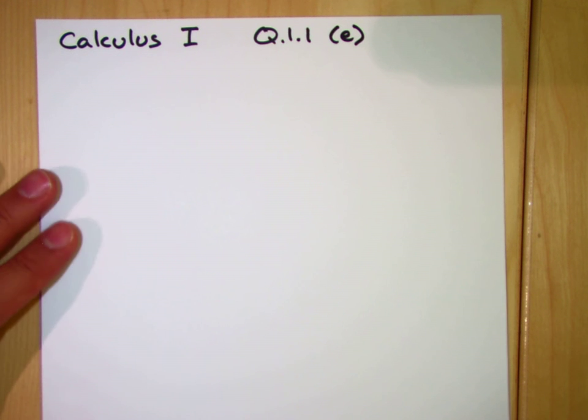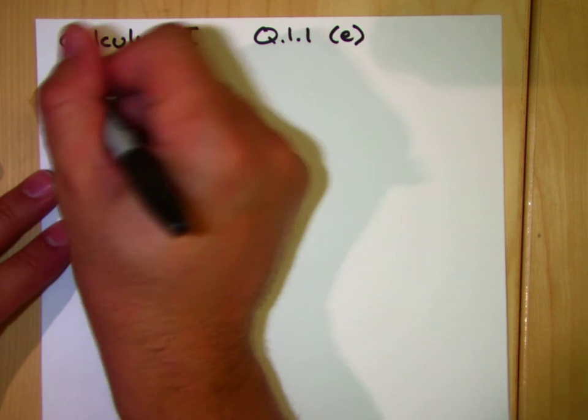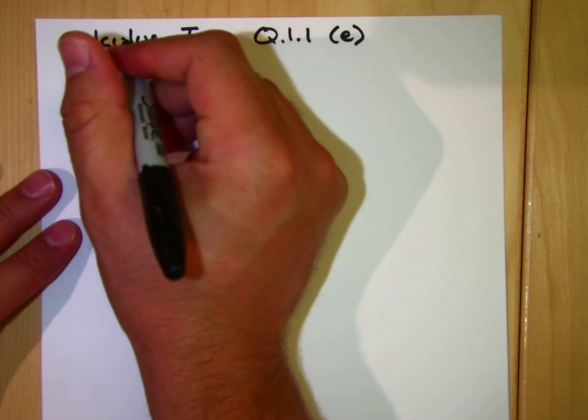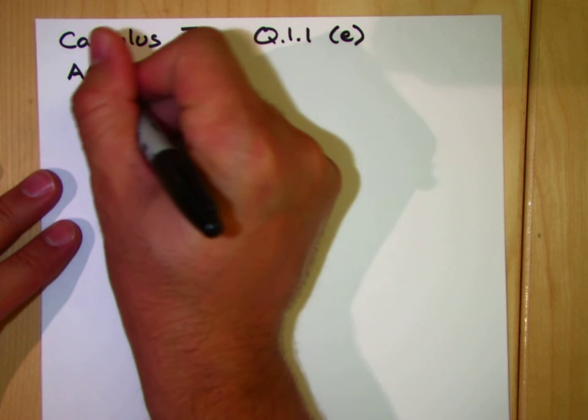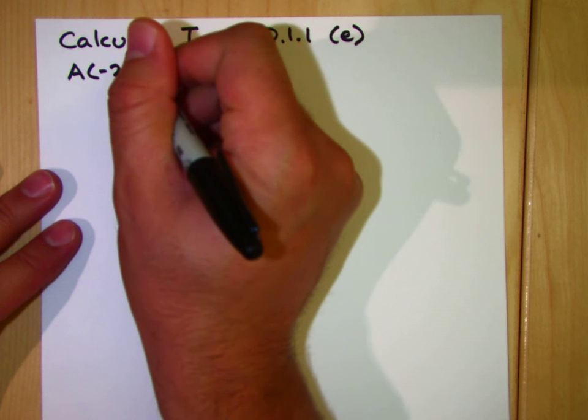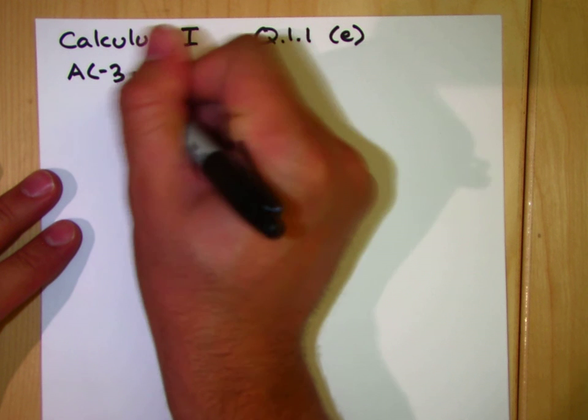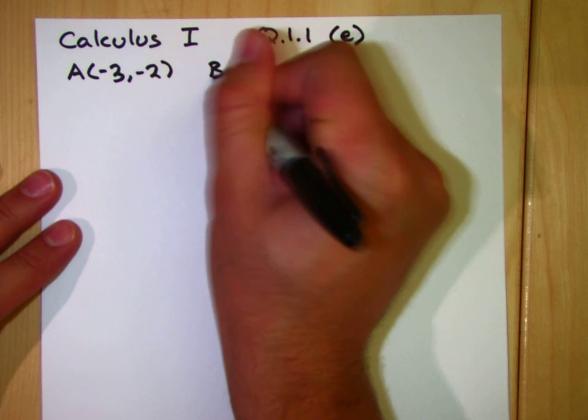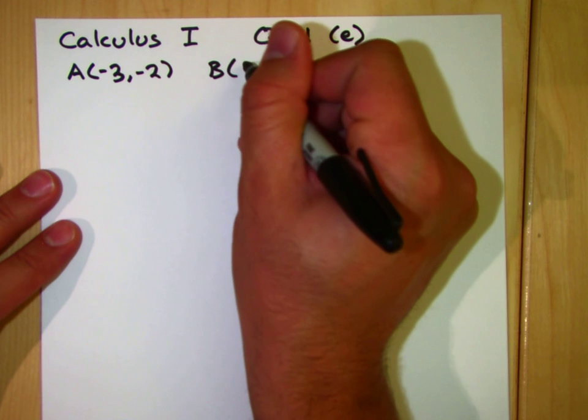Okay, this is question 1.1, part E, and here we've got point A, which has got coordinates negative 3, negative 2, and point B, which has coordinates 2, 3.